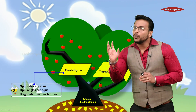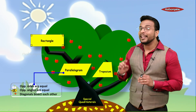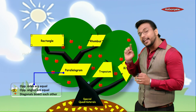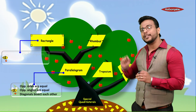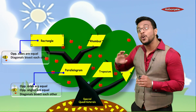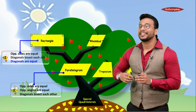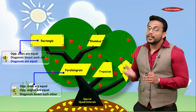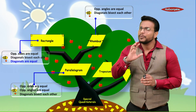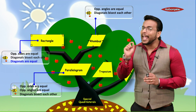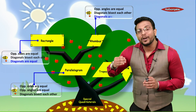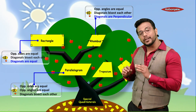The parallelogram further branches into a rectangle and a rhombus. Rectangle properties: opposite sides are equal, diagonals bisect each other, and diagonals are equal. Rhombus properties: opposite angles are equal, diagonals bisect each other, and diagonals are perpendicular.